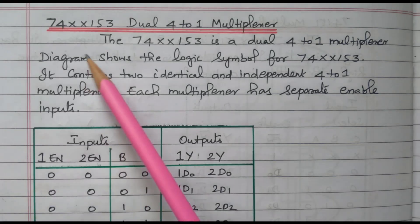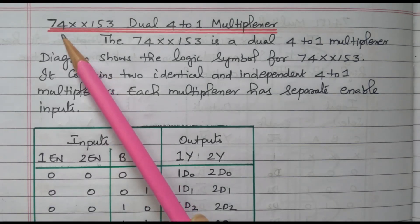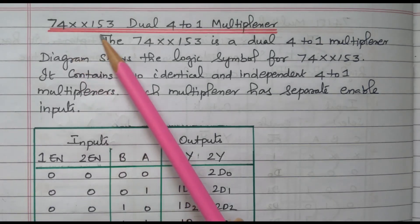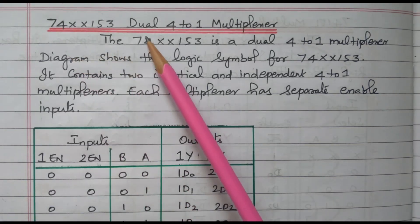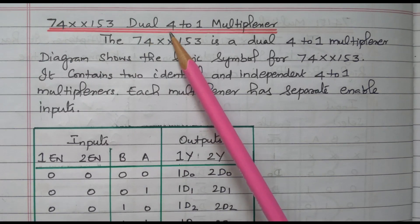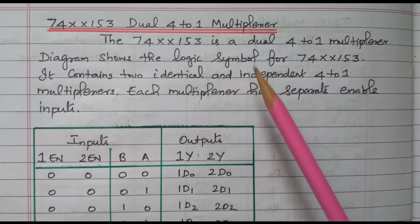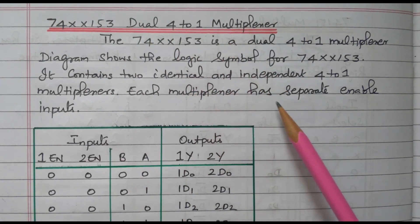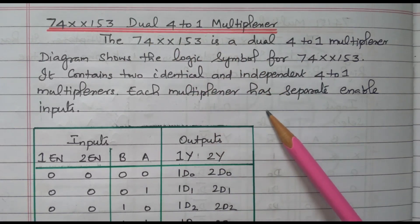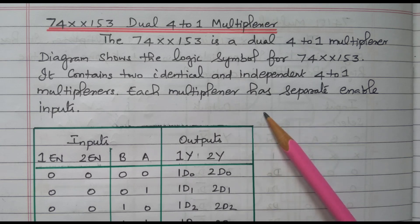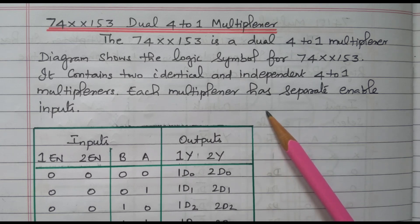Welcome viewers. In this video we will see the 74153 dual 4-to-1 multiplexer. Subscribe this channel for more videos and notifications. Soft copy of this material is available in the drive — the link is given in the description box.